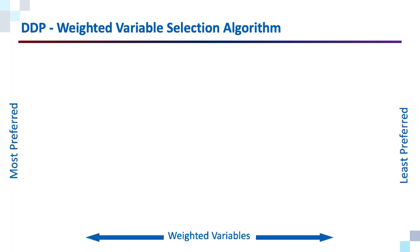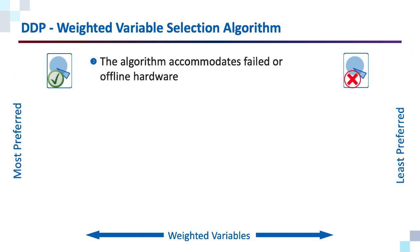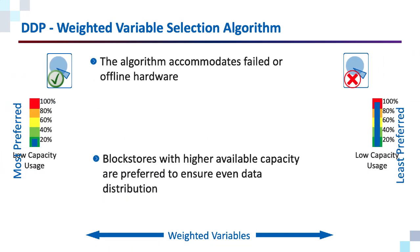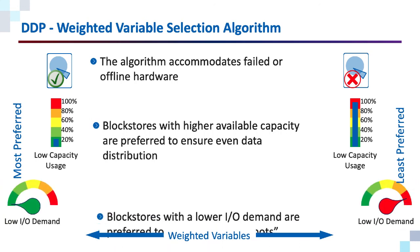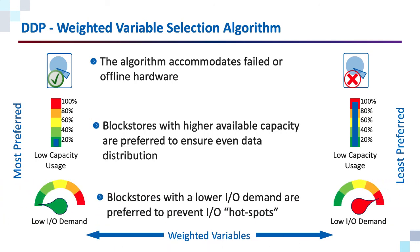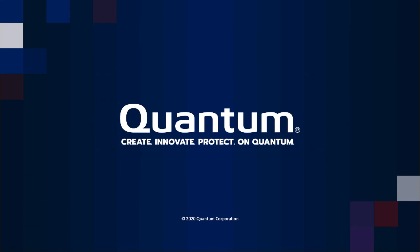In summary, DDP can be defined as a weighted variable selection algorithm. The algorithm accommodates failed or offline hardware. It gives preference to block stores with higher available capacity to ensure an even distribution of data and to minimize storage bottlenecks. Block stores with a lower IO demand are preferred to avoid IO hotspots. For more information on DDP and to view an in-depth video on how it differentiates from other data placement strategies, visit our website.